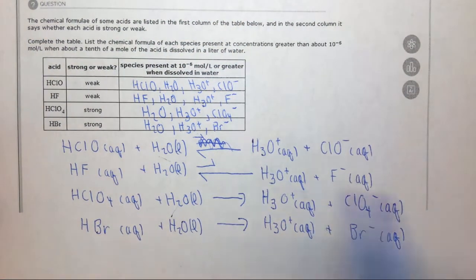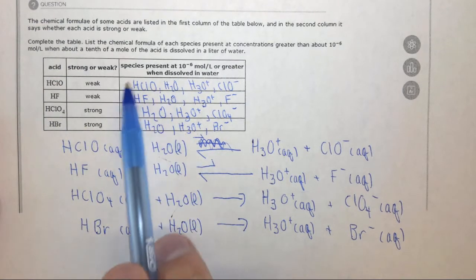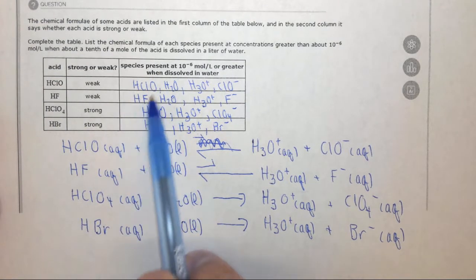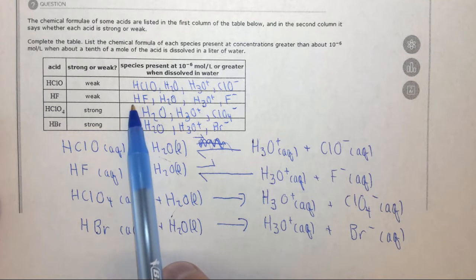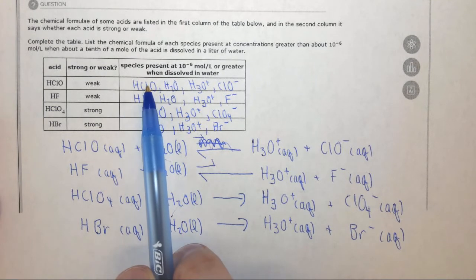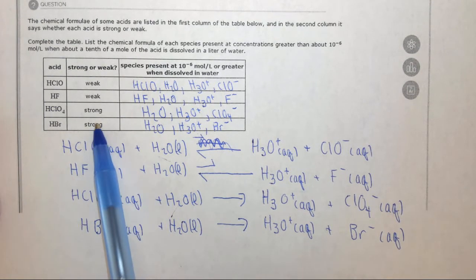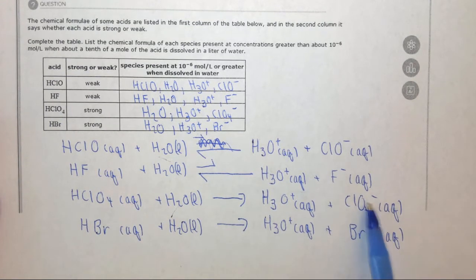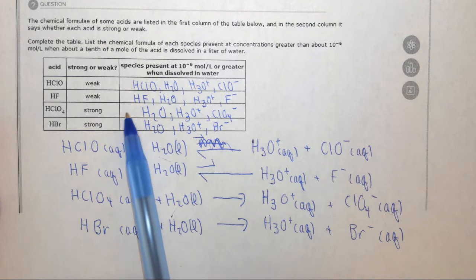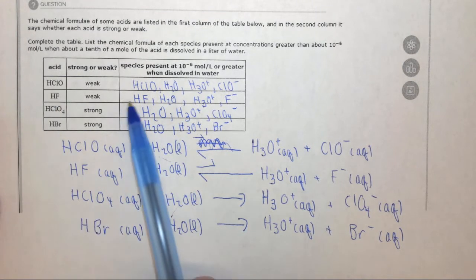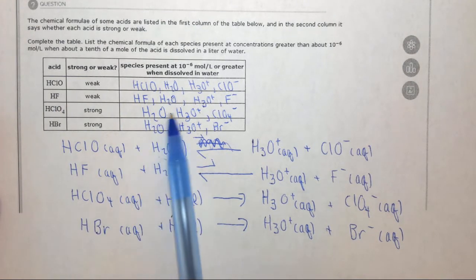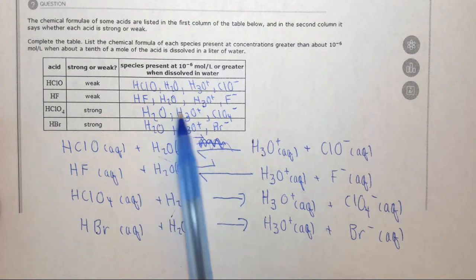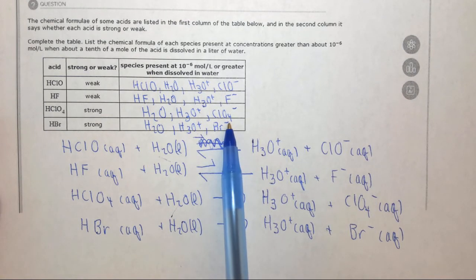So the difference is, for the weak acids, the acid is present in aqueous solution. Whether it's HClO or HF, the acid is present in solution. But for strong acids, the acid is completely reacted to form H3O plus and the conjugate base minus. So the acid, the original acid, is not present in solution. The other things are essentially the same, water, H3O plus, and the conjugate base.